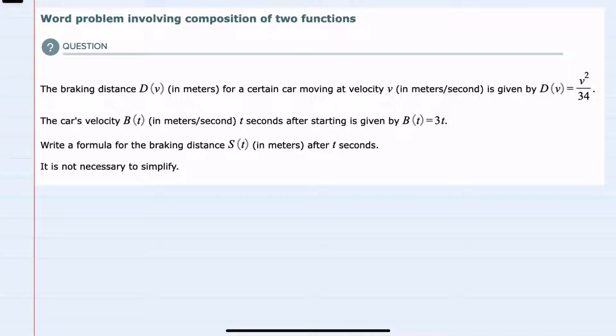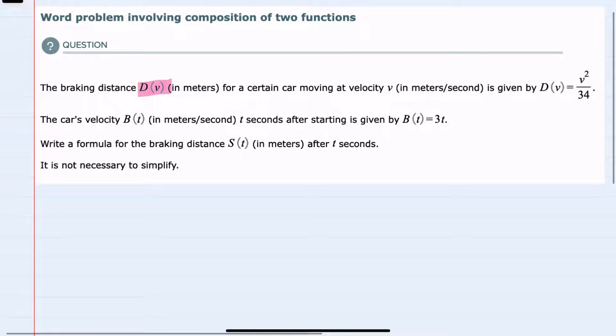In this video, I'll be helping you with the Alex problem type called word problem involving composition of two functions. We're given two functions here. The first is breaking distance, which is a function of velocity. So d of v is velocity squared divided by 34.